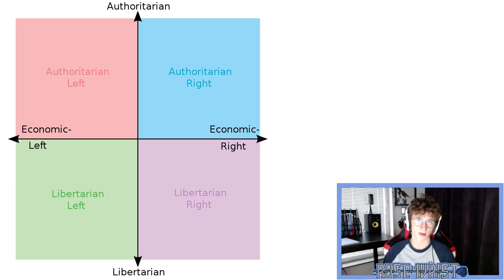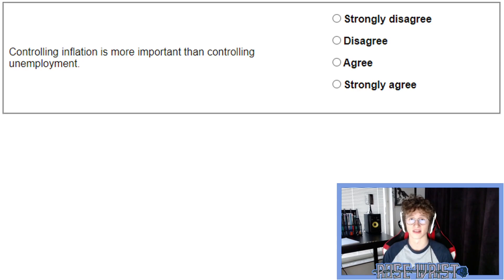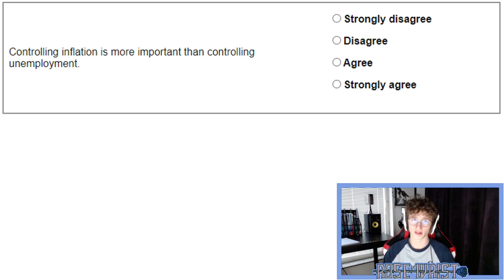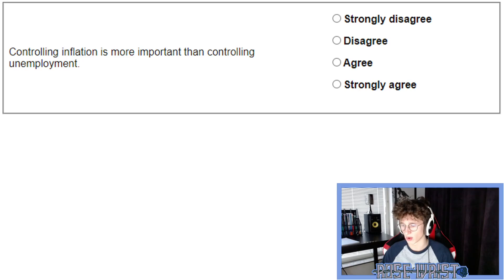And that's exactly what we're going to be doing in this video. The question in question is this one right here: 'Controlling inflation is more important than controlling unemployment.' So initially, this may be a very, very confusing question. Part of this is because it's worded relatively poorly, even when I know what it's referring to. A lot of thoughts that someone might have is — both of these two things are bad, why do I have to decide which one is more important to control? I would like to control both. What sort of political ideas or ideologies could you get from my answer to this question? This seems like a very strange question.